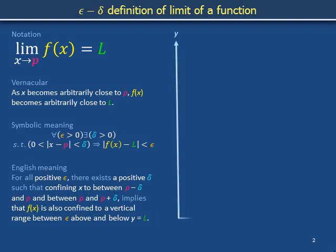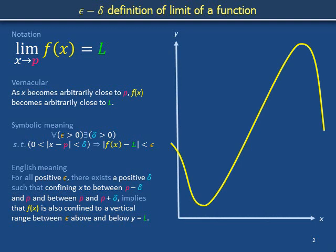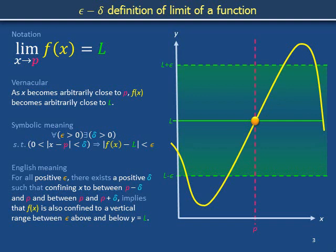We plot f of x versus x for some generic function. The golden circle marks the point x equals p, y equals l. Is l, in fact, the limit of f of x as x approaches p? We shade the vertical range between l plus or minus epsilon, and ask whether we can choose a positive delta to identify a pair of domains — one between x equals p minus delta and p, and the other between x equals p and p plus delta — within which the yellow curve is assured to remain vertically within the green band.